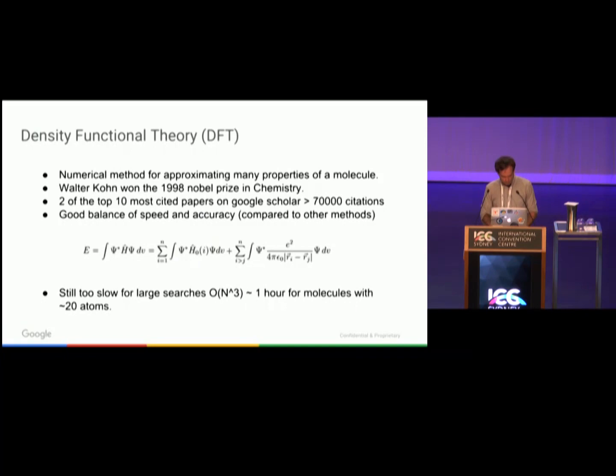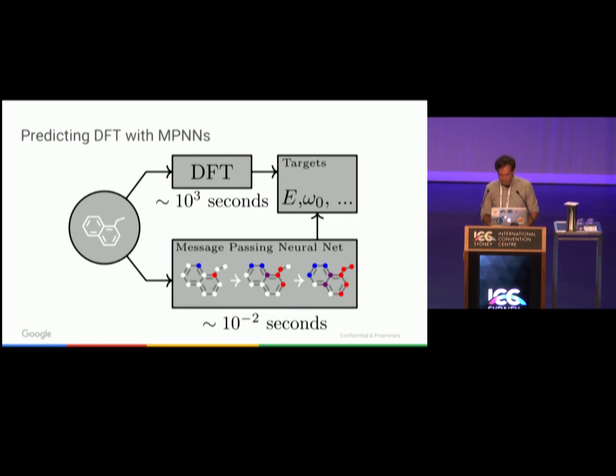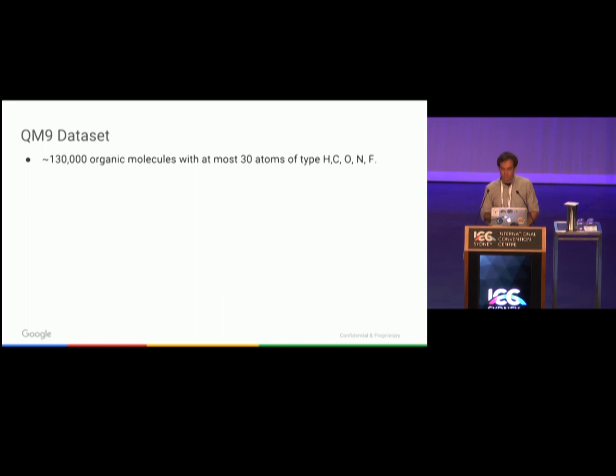For larger molecules, it can take a day. If chemists want to search over a space of a million molecules, this is prohibitively expensive. So that motivates our application. We're going to predict DFT with a message-passing neural network. The upshot is we're going to get very high accuracy to DFT, but the inference time of our networks is going to be 300,000 times faster than running DFT itself. We do this on the QM9 dataset, which consists of 130,000 small organic molecules. There are 13 different regression tasks computed by DFT.